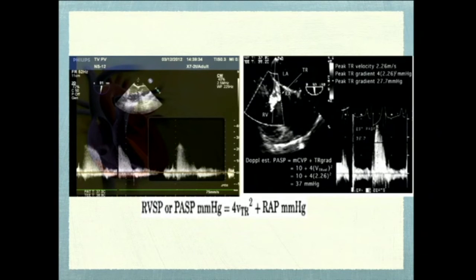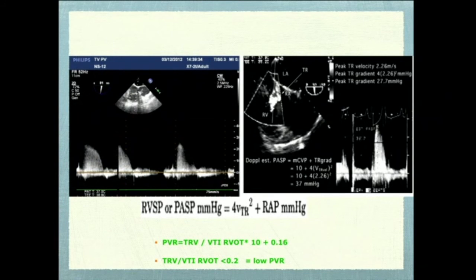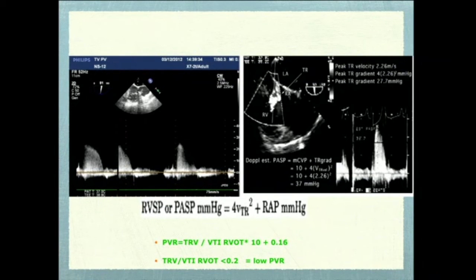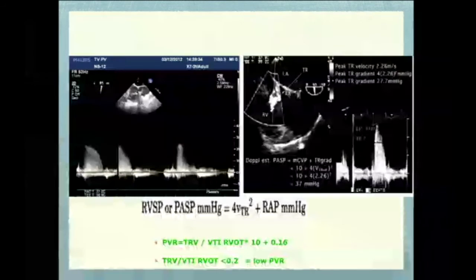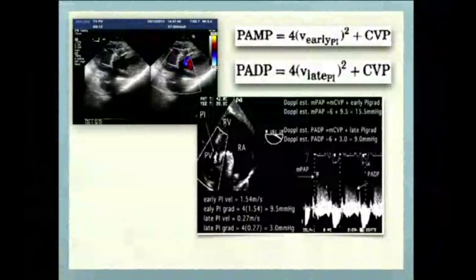The modified transgastric view is very good for measuring TR velocity — place a continuous wave cursor to measure TR velocities. For PVR measurement, without Swan-Ganz catheter we can use the formula: TR peak velocity divided by RVOT VTI, multiplied by 10, plus 0.16. This is very important when managing Eisenmenger patients or ASD patients with severe pulmonary hypertension. If PVR is less than 0.2, the patient is in operable condition.